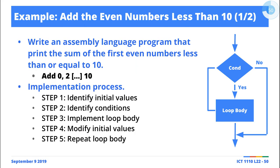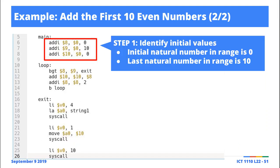Our initial conditions are 0 and 10. Zero is the first even number we start working with, and 10 is the last number in the range. We include 10 because we only break out of the loop once the value being processed is greater than 10. You'll notice there are a couple of things going on — for instance, line 13 in the revised example is actually part of the initial values.